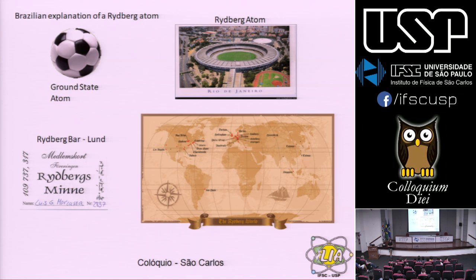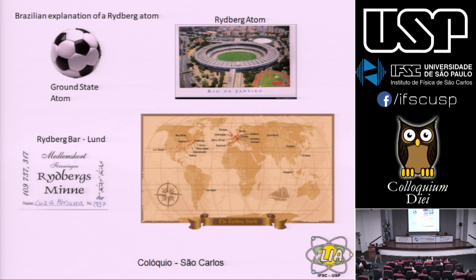O interesse em átomos de Rydberg é porque você pode fazer computação quântica, ou porque ele é muito sensível a campos — ótimo para detectar campo. O Rydberg foi um professor da Universidade de Lund, na Suécia. Estive lá numa conferência; eles têm um bar no Departamento de Física chamado Bar Rydberg, mas só podem vender bebidas para os associados. Sou associado número 2.837. No mapa de átomos de Rydberg, nós somos o único pontinho abaixo da linha do Equador.